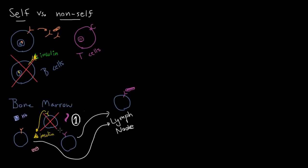The same exact process happens for T cells, except it occurs in the thymus, where T cells mature. In the thymus, T cells differentiate, each gets a unique receptor, and those that react to self too strongly are killed. But this is not a foolproof method — otherwise we wouldn't need a second step.